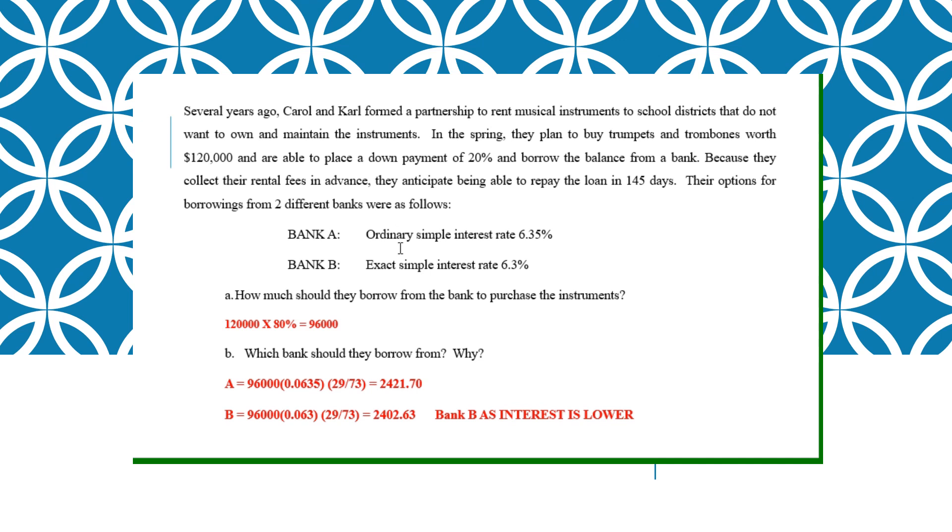Bank A, Bank B, one is ordinary, one is exact. Basically, how much should they borrow? So 80% only because 20% goes on that. So if you're left with 80%, which bank should they borrow from? So you use your I equals to PRT. This is ordinary, it'll be based on 360 days. This is exact, based on 365 days. You find which one actually has a lower interest and that is the bank that you would choose.